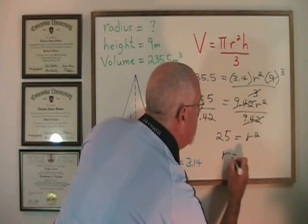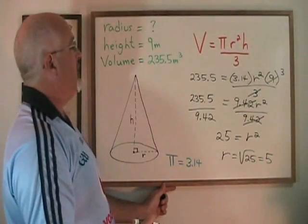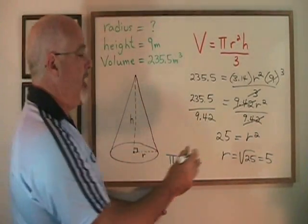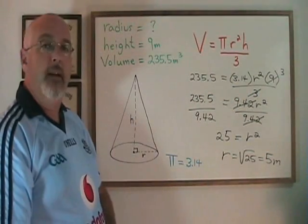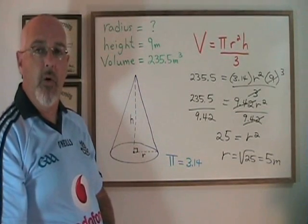r is going to be equal to the square root of 25, which is 5. And since our original units were meters and meters cubed, the radius is a distance. It will be measured in meters. This is an example of how you find the radius with the volume formula for cone.